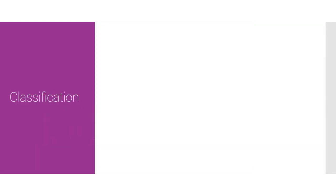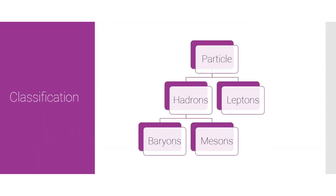Here's a nice little classification tree of particles. We have hadrons, which are then subdivided into baryons and mesons, and we also have leptons.